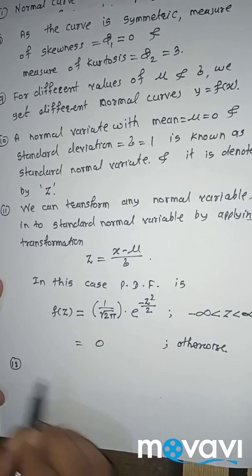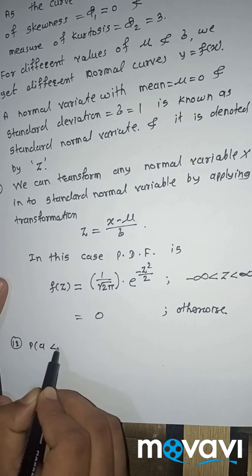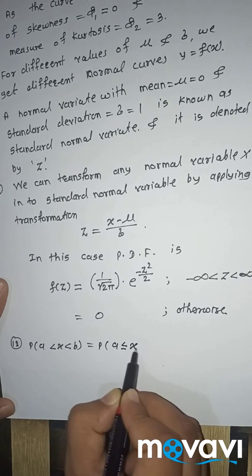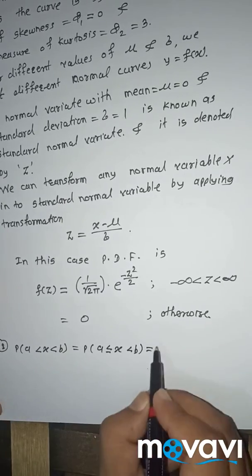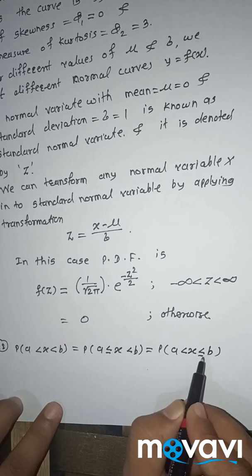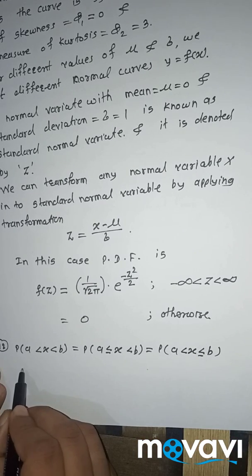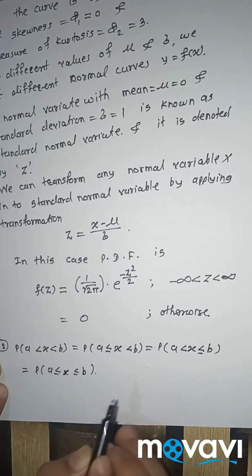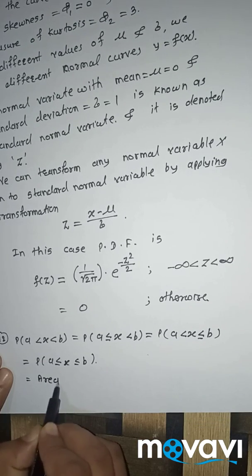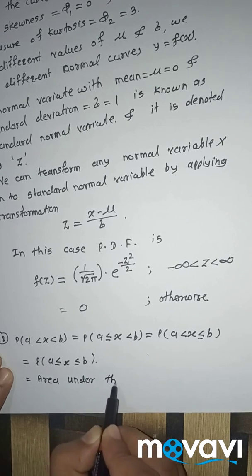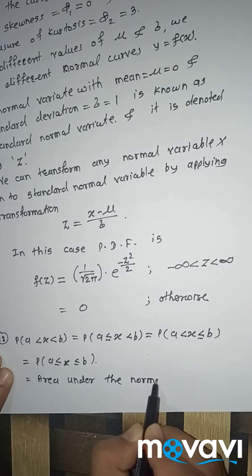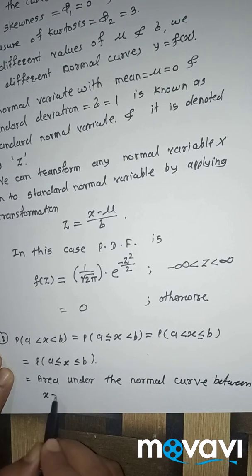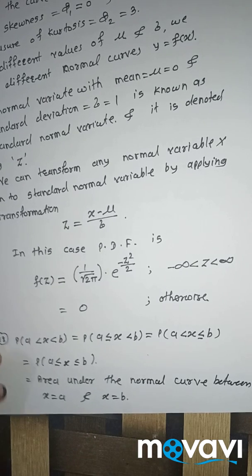Next property: the probability of a less than x less than b is equal to the probability of a ≤ x < b, which equals the probability of a < x ≤ b, which equals the probability of a ≤ x ≤ b, and this equals the area under the normal curve between x = a and x = b.